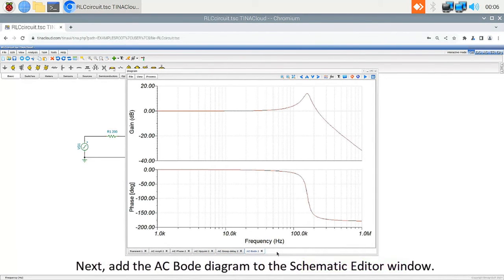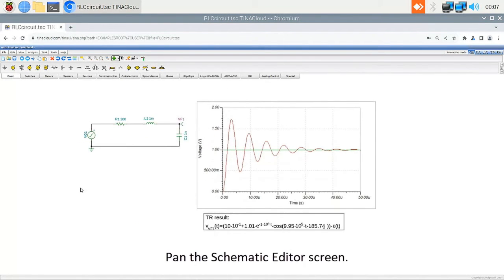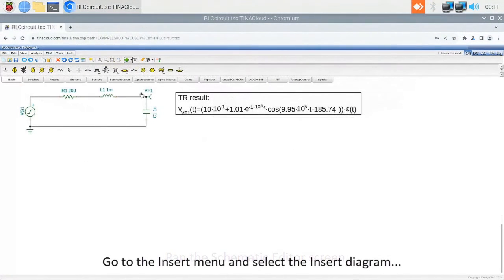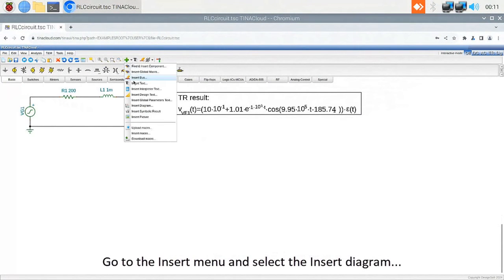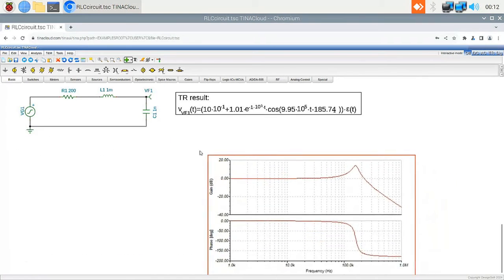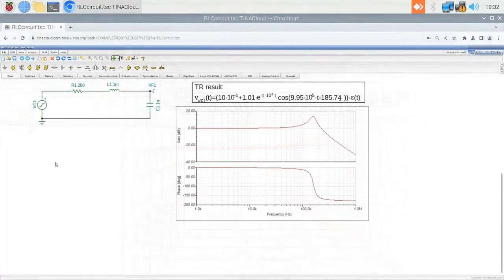Next, add the AC Bode Diagram to the Schematic Editor window. Close the Diagram, pan the Schematic Editor screen, go to the Insert menu and select the Insert Diagram. Set the Diagram parameters as shown on the screen, and then press the Insert button.